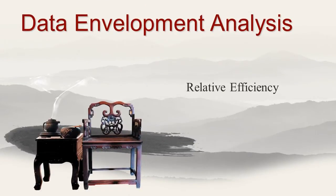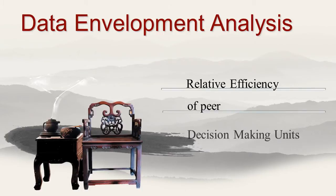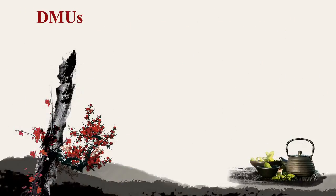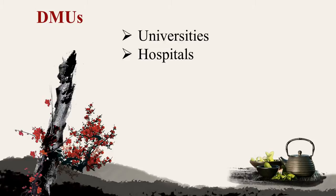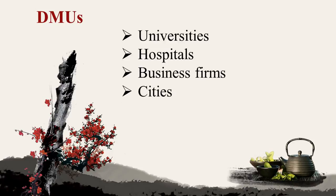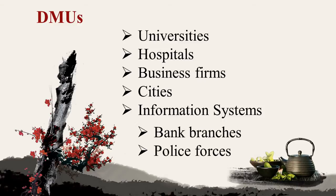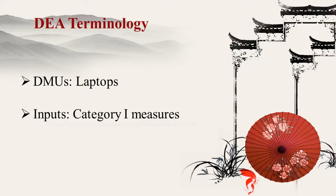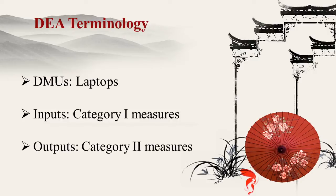DEA is originally designed to measure the relative efficiency of peer decision-making units. Here are some examples of decision-making units, or DMUs. In DEA, laptops are called DMUs, Category 1 measures are called inputs, and Category 2 measures are called outputs.